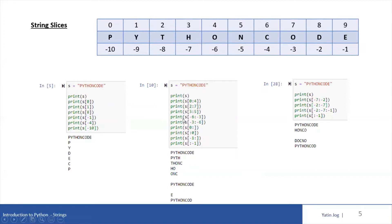Now, I can use the negative index with a slice as well. Print a slice starting from minus 6 till minus 3. Starting from minus 6 till minus 3, the output is o, n, c — these three characters. Minus 3 will be excluded, so starting from minus 6 till minus 3, the output is o, n, c.